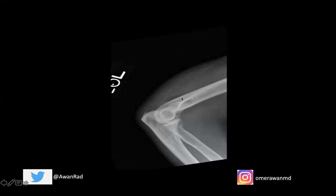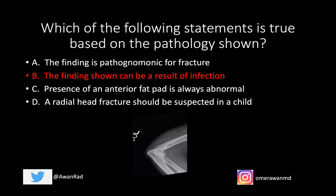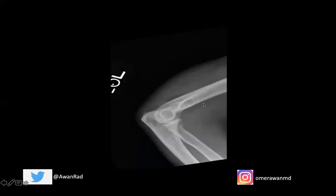This is a nice example of what a joint effusion looks like and its diagnostic implications. The finding is not pathognomonic for fracture — it would only be pathognomonic in the setting of trauma. The finding can be seen as a result of infection, such as septic arthritis. The presence of an anterior fat pad is not always abnormal — you should always have one, but displacement or enlargement would be abnormal. The presence of a posterior fat pad is always abnormal. And a radial head fracture should be suspected in an adult, not a child. So the answer is B.